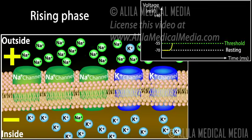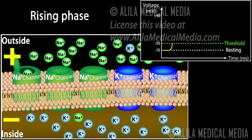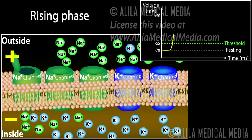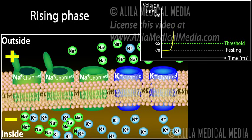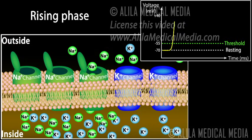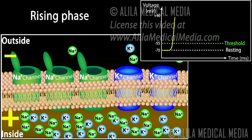At threshold, sodium channels open quickly. Potassium channels also open, but do so more slowly. The initial effect is therefore due to sodium influx. As sodium ions rush into the cell, the inside of the cell becomes more positive and this further depolarizes the cell membrane. The increasing voltage in turn causes even more sodium channels to open. This positive feedback continues until all the sodium channels are open and corresponds to the rising phase of the action potential.